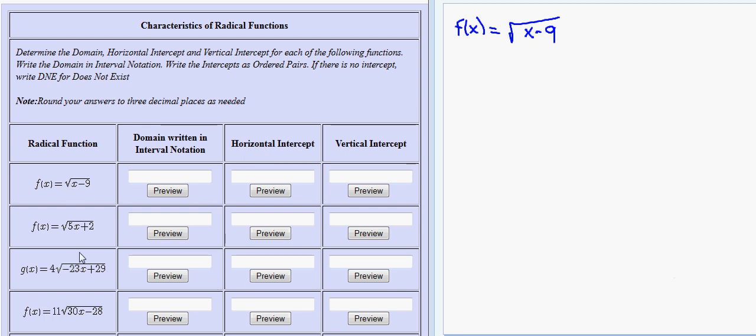In this problem we're given several radical functions. We're asked to find their domain and write our answer in interval notation and to find both the horizontal and vertical intercepts.